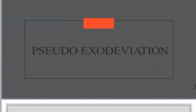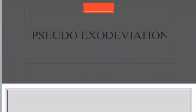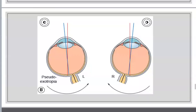Now let's talk about exodeviation. Like esodeviation, I have false and true exodeviation. The causes of false exodeviation: first, very large interpupillary distance — both eyes are far apart, giving a false impression of exodeviation. Second, positive angle kappa — with temporal dragging of the fovea, such as in retinopathy of prematurity or familial exudative retinopathy, the intersection point is more nasal, giving a false impression of divergence.